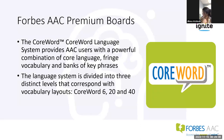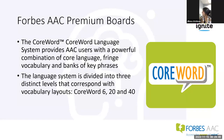There are also Forbes AAC premium boards. The CoreWord language system provides AAC users with a powerful combination of core language, fringe vocabulary, and banks of key phrases. It's divided into three distinct levels — CoreWord 6, 20, and 40 — that correspond with vocabulary layouts. The CoreWord language system features dynamic vocabulary layouts that automatically change as the user makes selections. Once a word has been selected, the layout updates to show only words likely to be used next. By offering these next words in plain view and removing unwanted vocabulary, users don't have to waste time searching for their next word, ensuring maximum efficiency with a minimal learning curve.